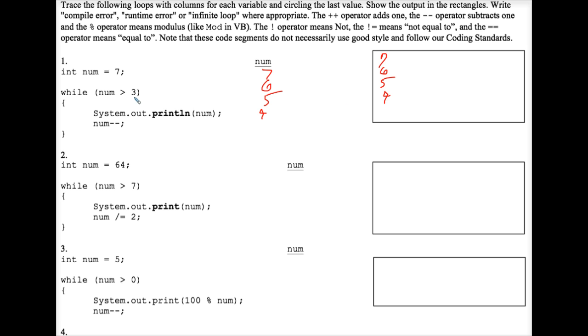And now it gets good. After it prints 4, because the num minus minus is below that, it bumps down to 3. We go to the top of the loop, and since 3 is not greater than 3, that's false. We don't do anything else, and here's your final answer.